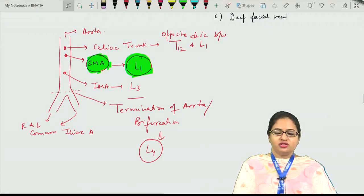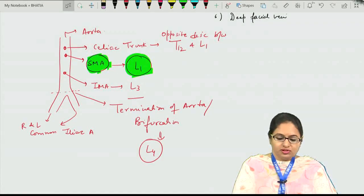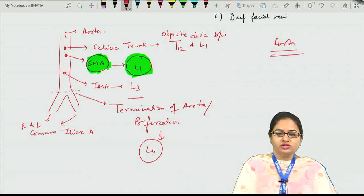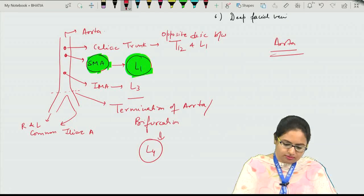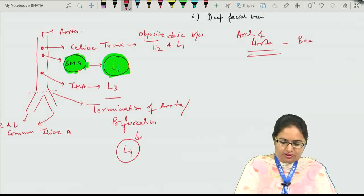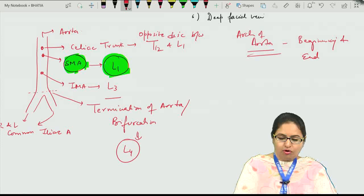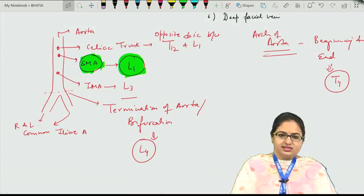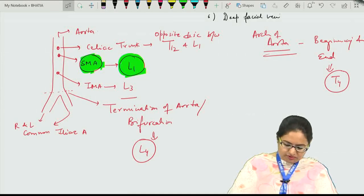The termination or bifurcation of the aorta occurs at approximately the lower border of L4. Regarding the arch of aorta, the beginning and end of the arch of aorta is at the level of T4, the lower border of T4. These are the various levels regarding the major vessels.